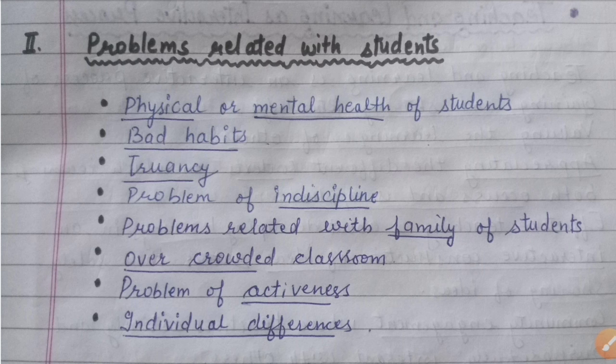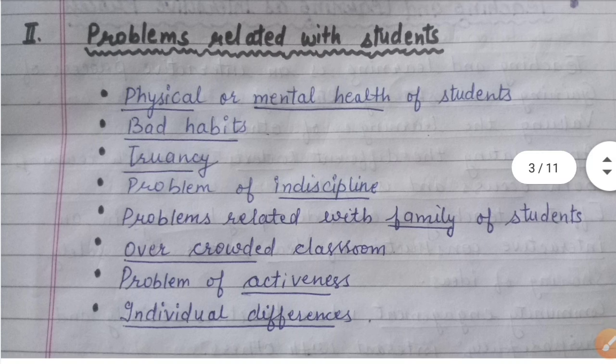The next point is the problem of activeness. Activeness means children are not actively participating in class — when the teacher is explaining something, children are not engaged. The next problem is individual differences — all individuals are different; some children have a different learning pace. Teachers need to deal with slower learners by giving remedial classes and remedial instructions.